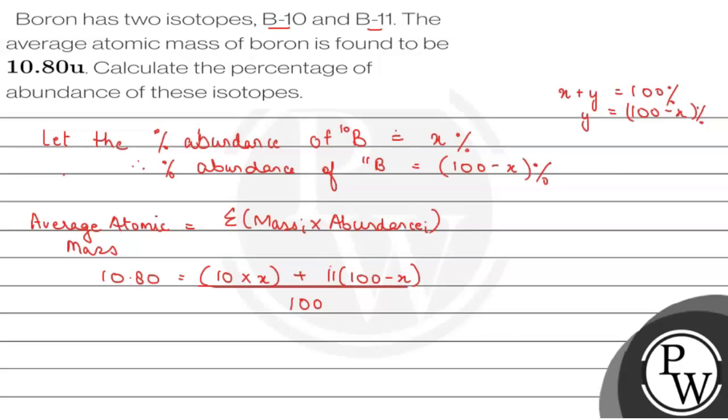Because in the formula we use fractional abundance, but here the values are present in percent, so we will divide this by 100.